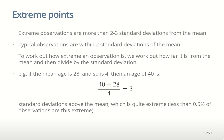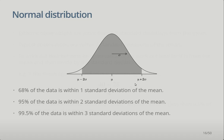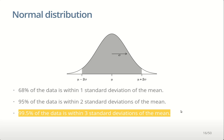The further you are from the mean, the more extreme the observation, and the less likely it is to occur. Extreme observations are more than two or three standard deviations away from the mean — typical observations (95% of them) are within two standard deviations, so anything past that is relatively extreme. To work out how extreme an observation is, we work out how far it is from the mean in terms of standard deviations. For example, if the mean age is 28 and standard deviation is 4, then an age of 40 is three standard deviations away — quite unlikely, since less than 0.5% of observations are this extreme.